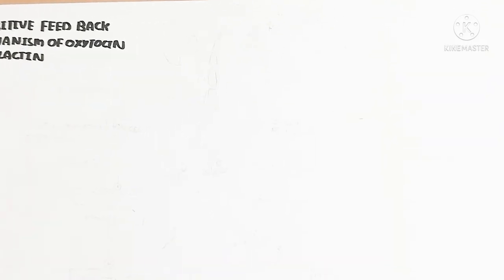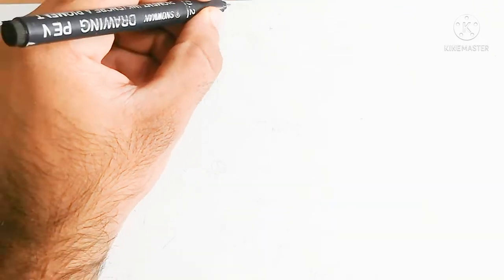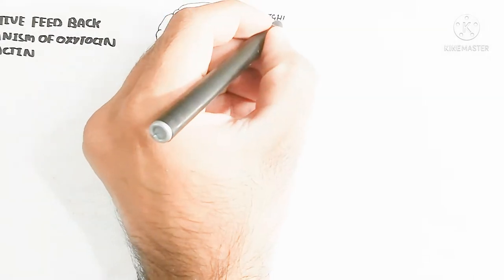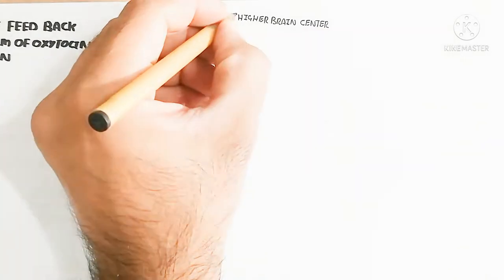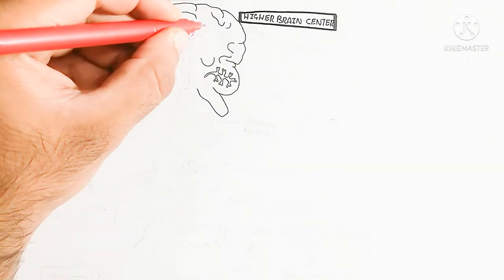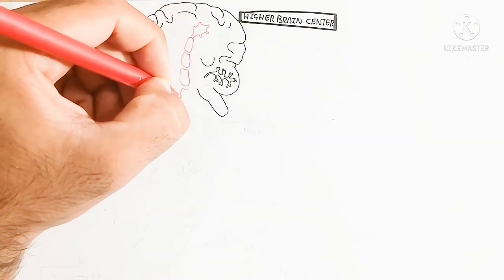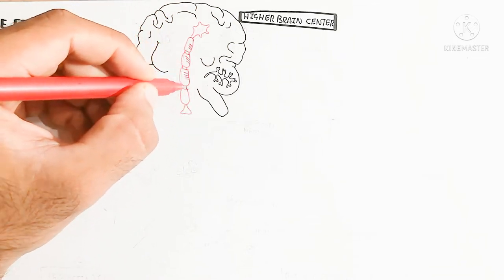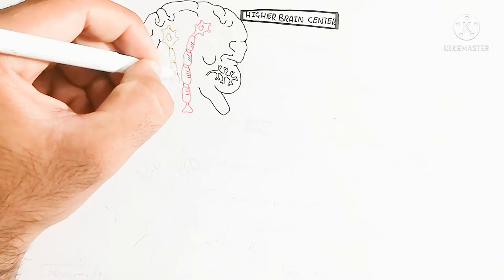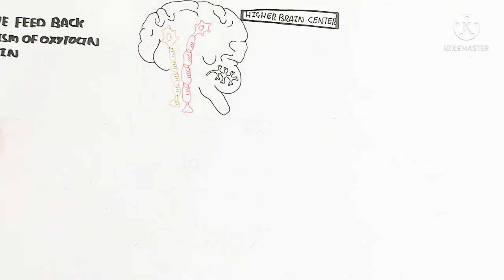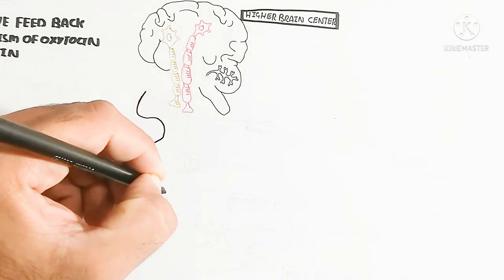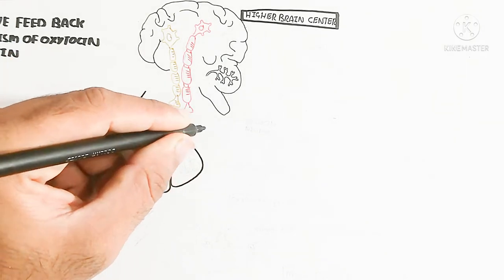Oxytocin is involved in pair bonding from female to male as well as from female to baby. Here is the higher brain center, which learns and stimulates oxytocin with respect to their children or baby. Here is the nerve cell which arises from the somatosensory cortex.